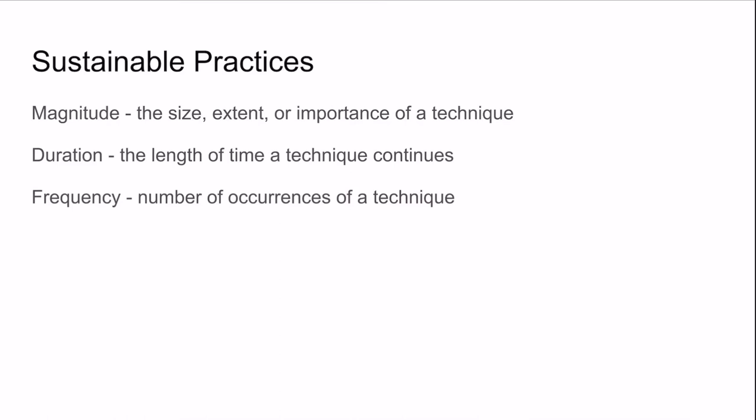In order to use these sustainable methods, we have to consider three different variables: magnitude, duration, and frequency. These will help us know how effective the sustainable practice will be. The magnitude is the size, extent, or importance of a technique. The duration is how long you continue to use the technique. And the frequency is how many times you use the technique.